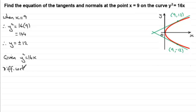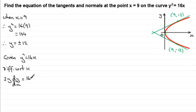I'm going to go first for differentiating implicitly — differentiate with respect to x. Assuming you're familiar with implicit differentiation (if not, there are tutorials on my website), differentiating y squared with respect to x gives 2y dy/dx, and differentiating 16x gives 16. Dividing both sides by 2y gives dy/dx equals 8 over y. I'll call that equation 1.